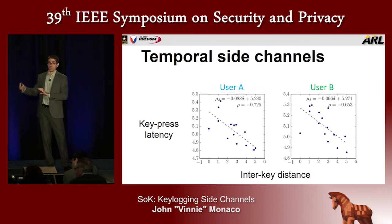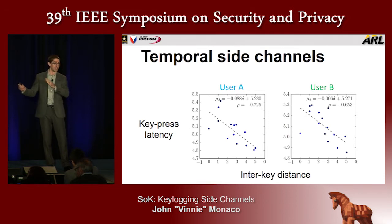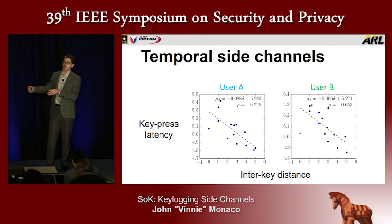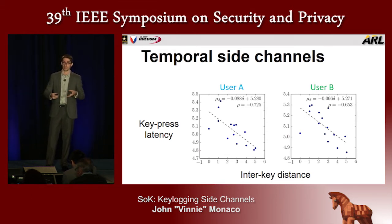The second factor is that this behavior is the same for different users. Looking at two different users, we see a very similar inverse scaling relationship between key press latency and inter-key distance. It's this temporal dependence and the similarity in behavior among users that would enable an attack where, with ground truth known keystrokes and associated timestamps from an independent dataset, we can infer what another user typed based only on the timings.